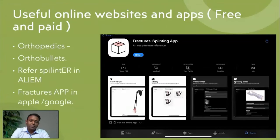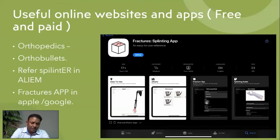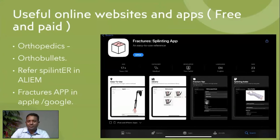In orthopedics, most orthopedic surgeons I know use OrthoBlullets. There's also the Splint site on ALiEM, and a really good app called the Fractures app made by an app developer who has a background in emergency medicine. You click through and it guides you towards what management and cast to use. It is still being adapted for developed countries, but if you're in a faraway place without access to orthopedics, it's a good reference.